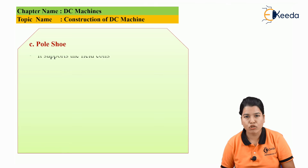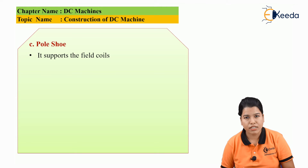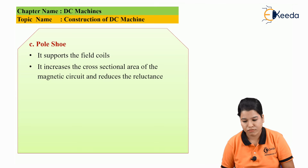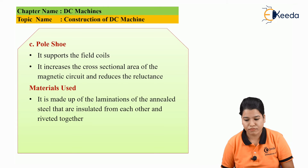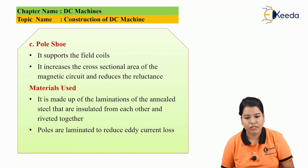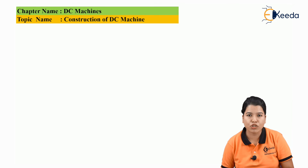The next part is pole shoe. The basic function of pole shoe is: it supports the field coil, and it increases the cross-sectional area which thereby reduces the reluctance. The material used for pole shoe is similar to pole core — annealed steel which is insulated and riveted together. It is laminated in order to reduce eddy current loss.